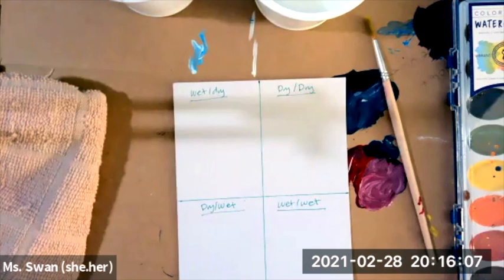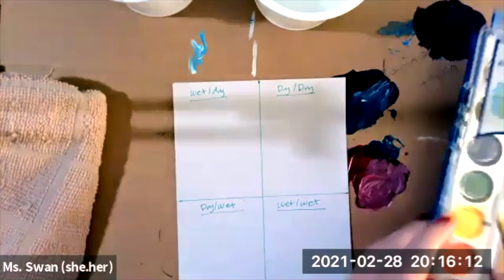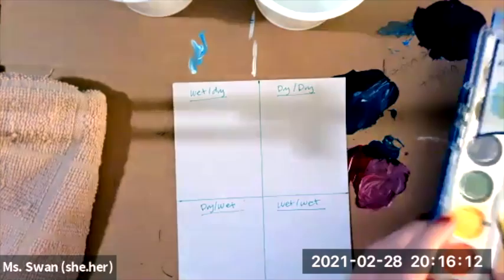The first one, wet on dry. First, you're going to wet your brush and mix it on dry paper. My paper is dry, my brush is wet. Simple enough.